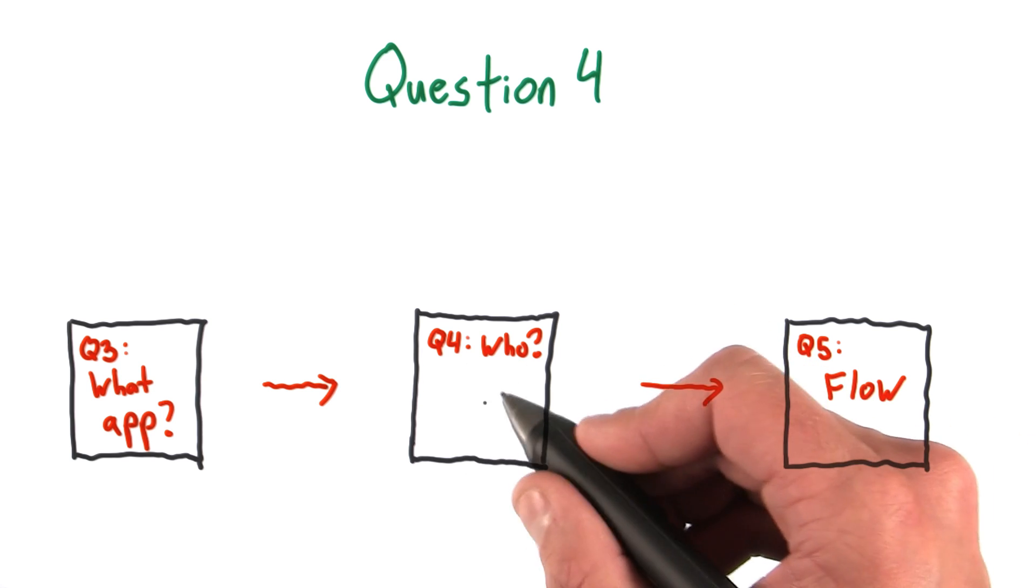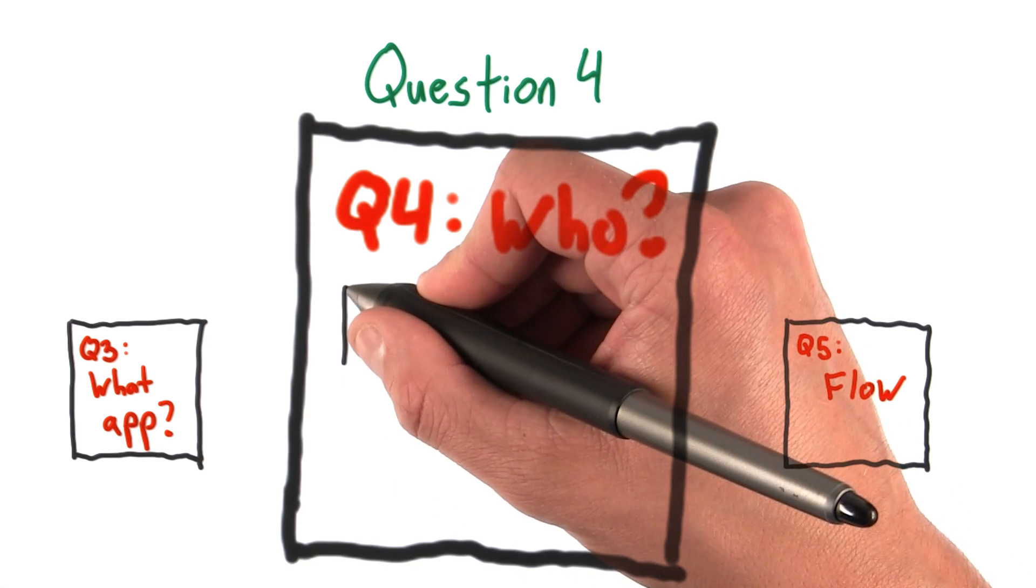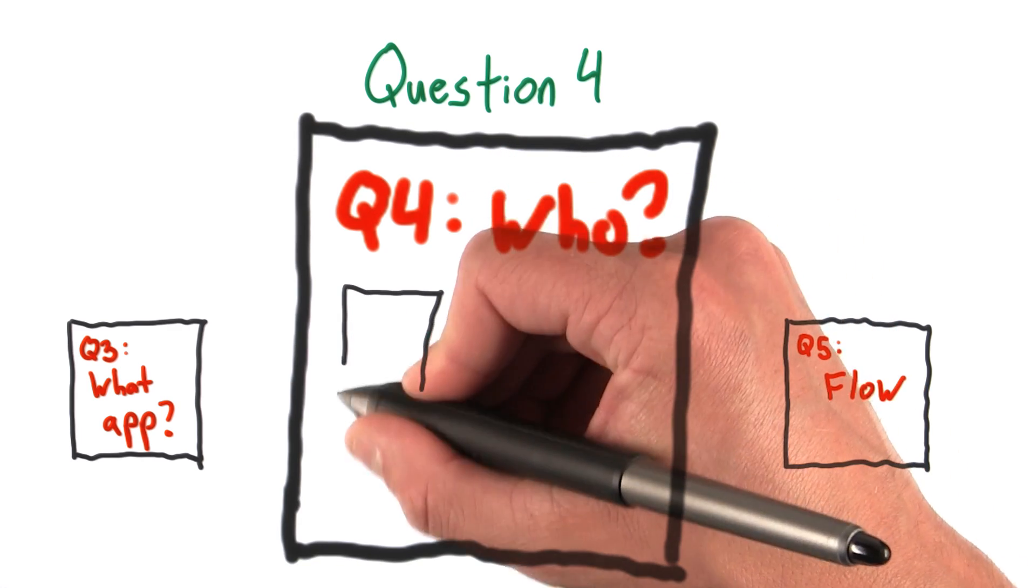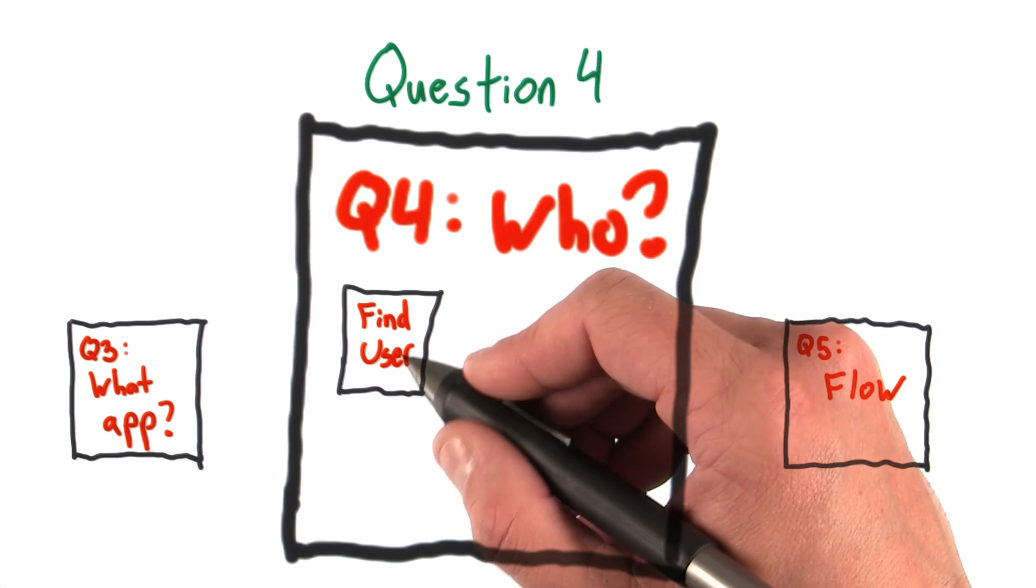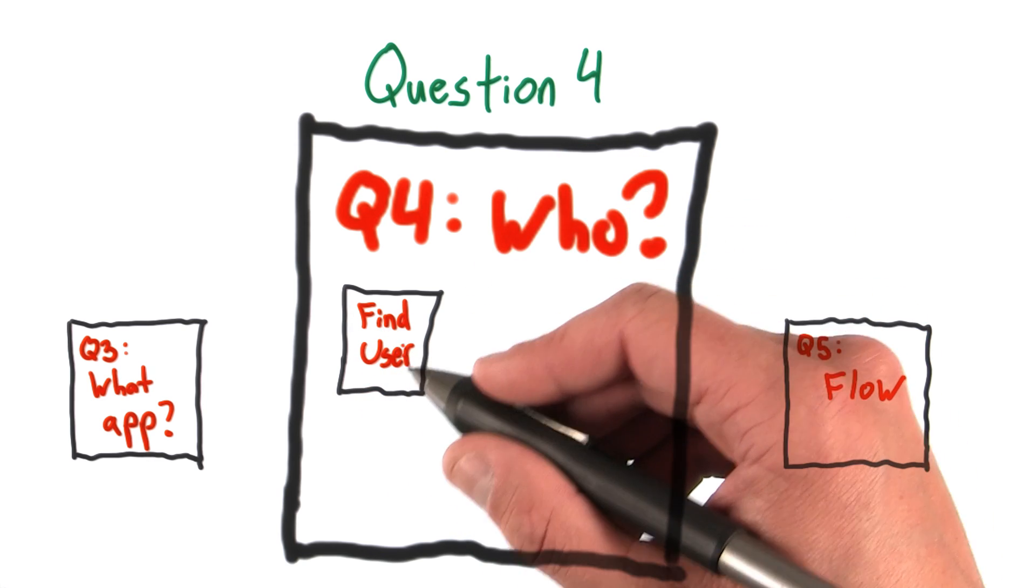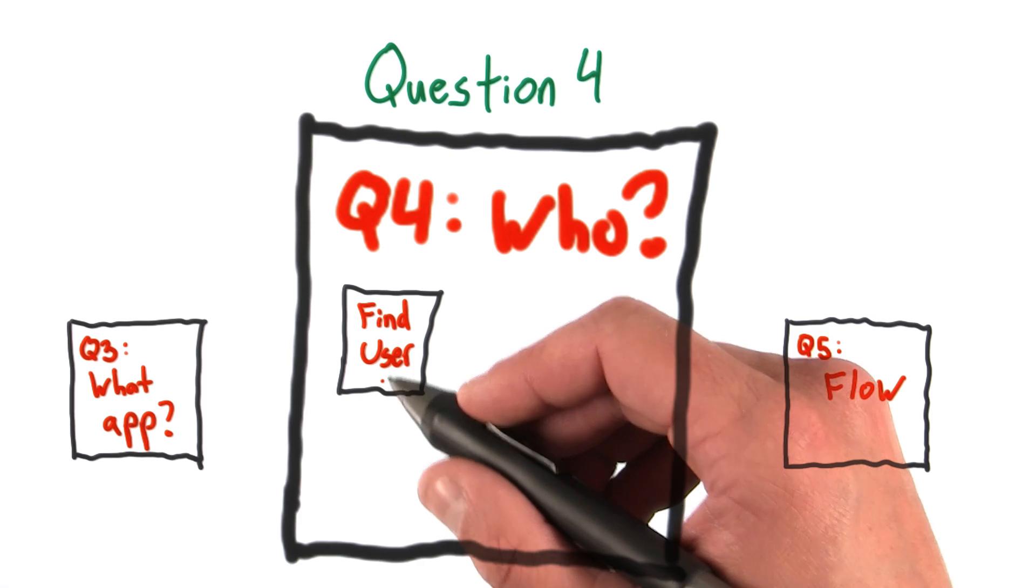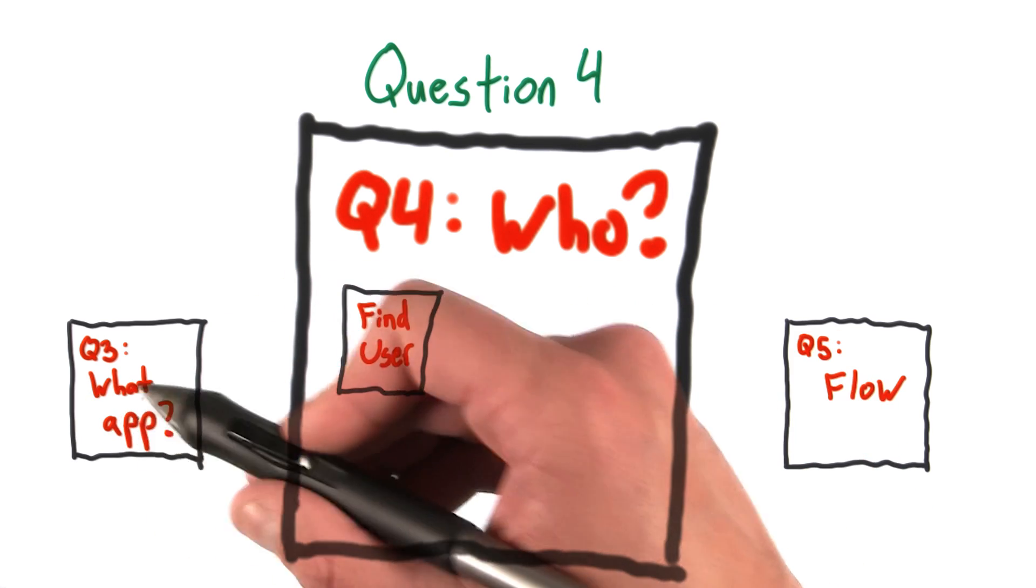But let's stay focused here. So the flow for what you'll do in this question itself is first, you'll find a potential user. This could be a friend, co-worker, family member, or somebody who you think could ever feasibly want to use the app you described here.